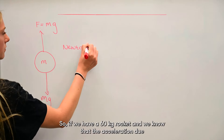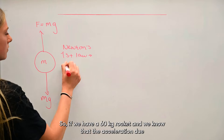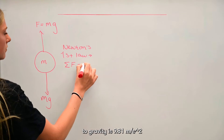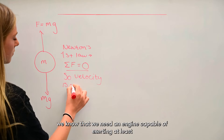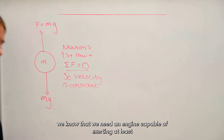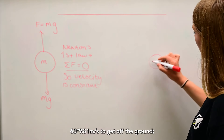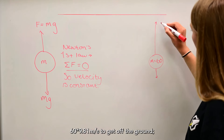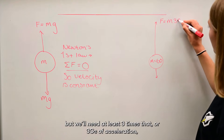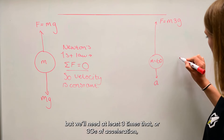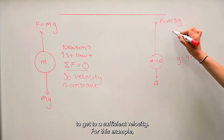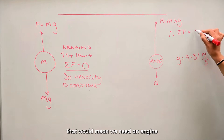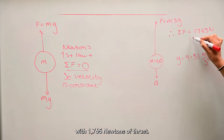So if we have a 60 kilogram rocket, we know that the acceleration due to gravity is 9.81 meters per second squared. We know that we need an engine capable of exerting at least 60 times 9.81 meters per second squared to get off the ground. But we'll need at least 3 times that, or 3 g's of acceleration, to get to a sufficient velocity. For this example, that would mean we need an engine with 1765 newtons of thrust.